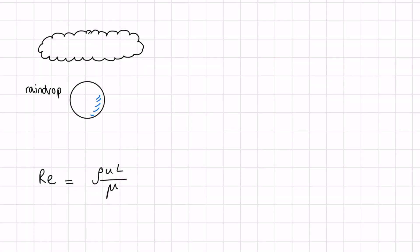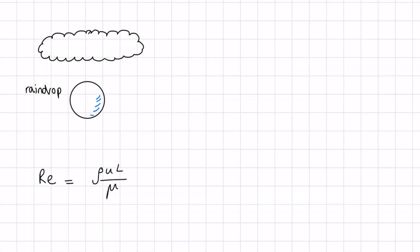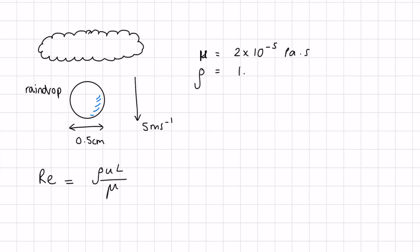Let's do a little bit of maths to understand how the Reynolds number works in a real-life application. Let's say we have a raindrop of size 0.5 centimeters falling through the air at 5 meters per second. We're told the viscosity of the air is approximately 2 times 10 to the minus 5 pascal seconds, and the density is 1.3 kilograms per meter cubed.